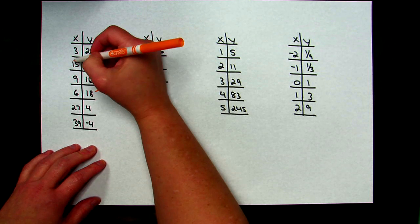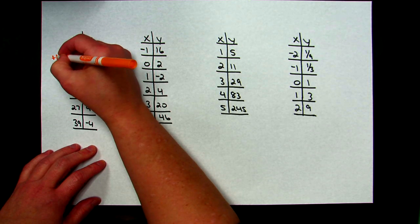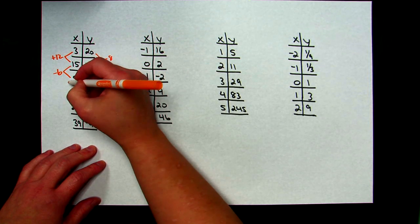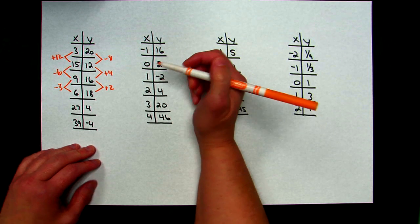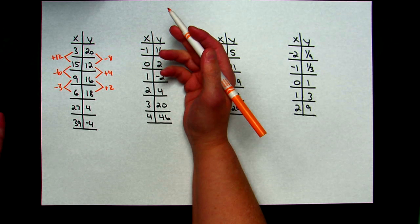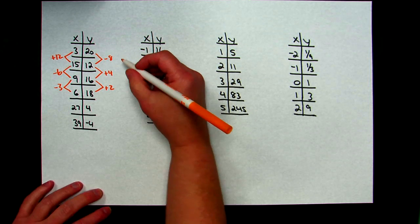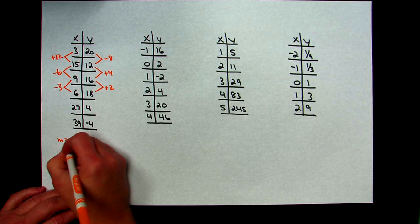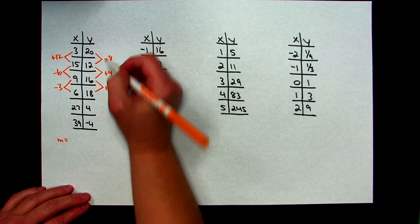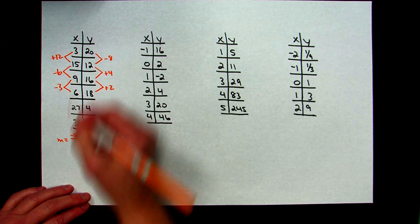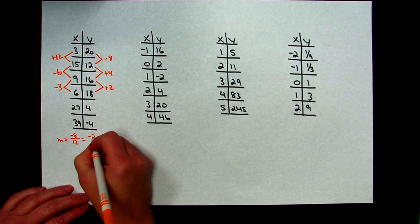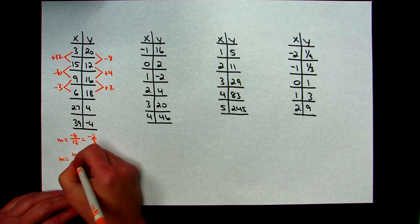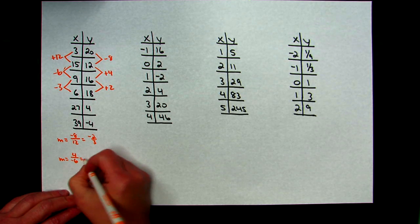On the left-hand side: 15 take away 3 gives a common difference of positive 12; 9 minus 15 gives negative 6; and 6 take away 9 gives negative 3. So I don't have a common first difference. Recalling that a linear function has a constant slope, I'll check the change in y's over the change in x's. The first pair gives negative 8 over positive 12, which reduces to negative 2/3. The next gives positive 4 over negative 6, also negative 2/3. And the next gives positive 2 over negative 3, again negative 2/3.